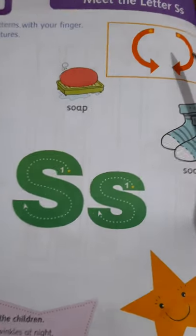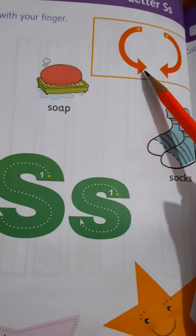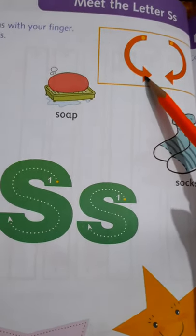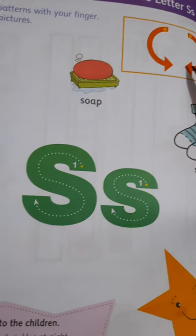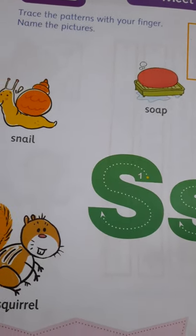For writing of S, we need two semicircles — right semicircle and left semicircle. Trace the pattern with your finger and name the pictures.